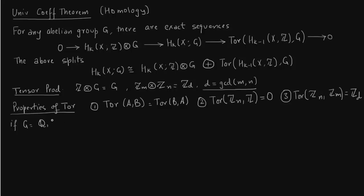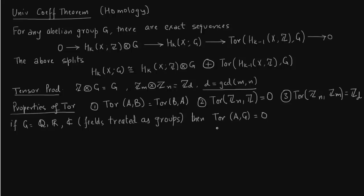Now, if the group G is a field — such as the rationals, reals, or complex numbers — we treat it as a group under addition. In that case, Tor(A, G) = 0. This makes rational homology theories easy. So when G is the rationals, reals, or complex numbers, computing homology with coefficients in G just reduces to tensoring what we have calculated in integers with G.